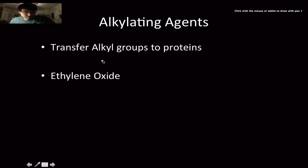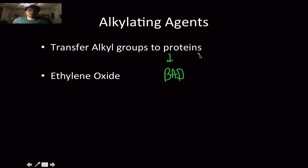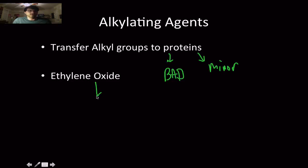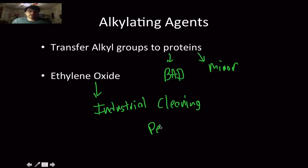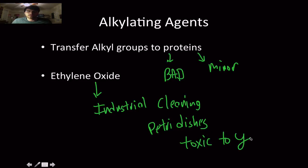There are also alkylating agents, which transfer alkyl groups to proteins. The effect can range from severe to minor depending on the bacterium — there is no perfect disinfecting agent. Ethylene oxide is one such agent, used industrially to clean petri dishes, but it is very toxic to humans as well — it will kill you, not just the bacteria.